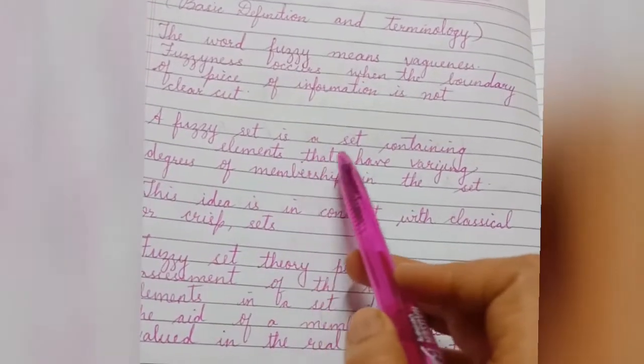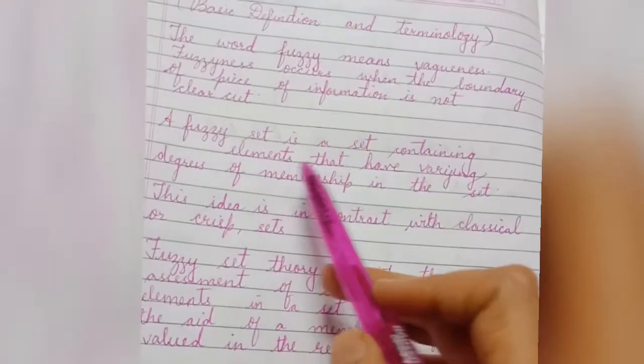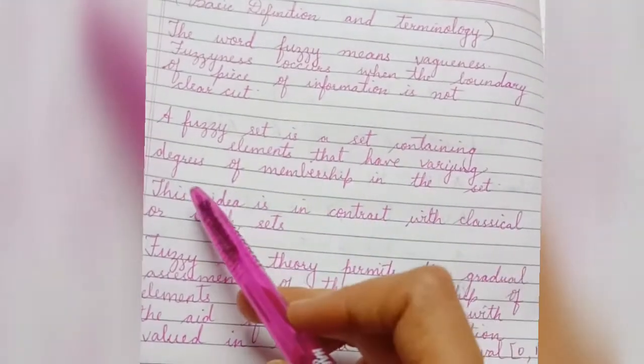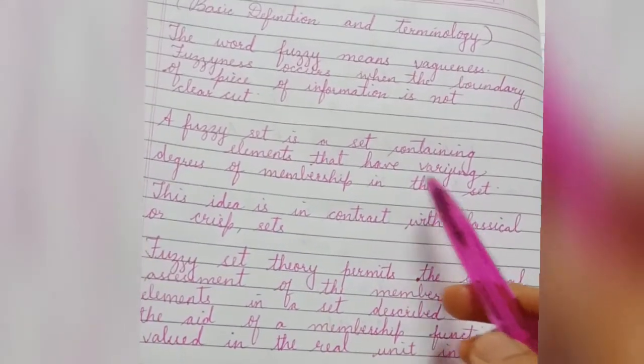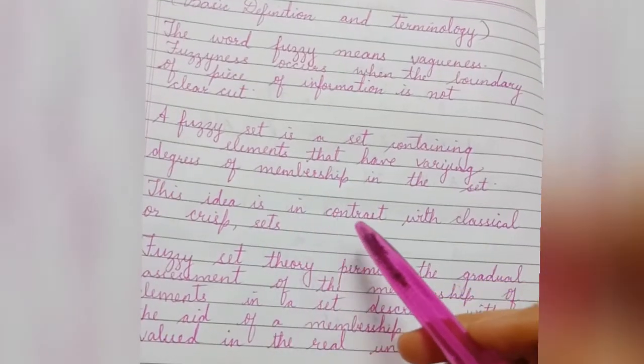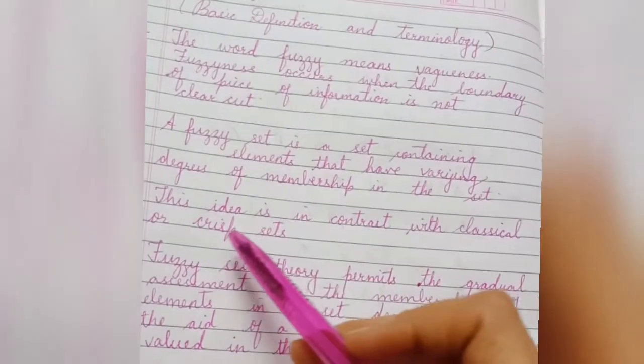A fuzzy set is a set containing elements that have varying degrees of membership in the set. This idea is in contrast with classical or crisp sets.